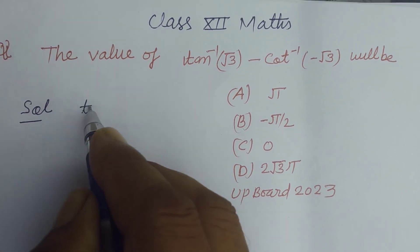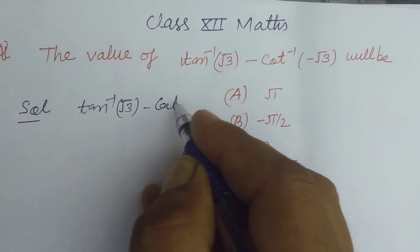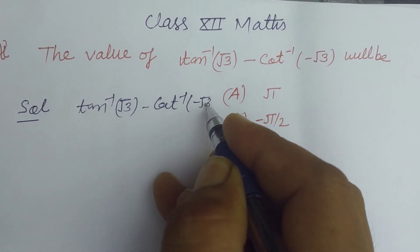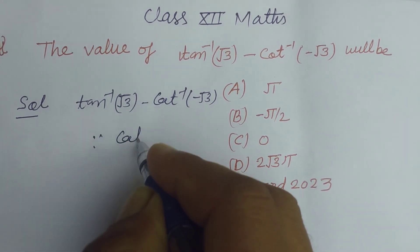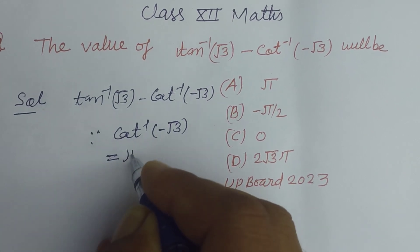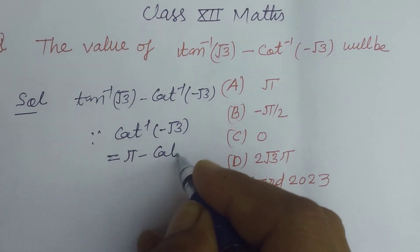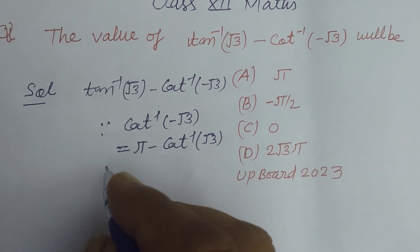Here it is given that tan^(-1)(√3) - cot^(-1)(-√3). Since you know that cot^(-1)(-√3) equals π - cot^(-1)(√3), so using this identity...